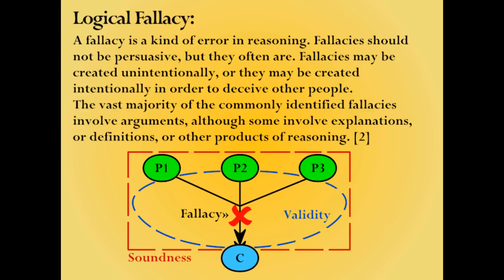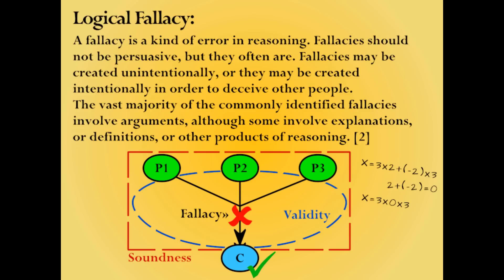It does not address the premises, nor does it address the conclusion. So when an argument contains a logical fallacy, it only indicates that the conclusion is not logically supported by the premises. Further, when an argument is rendered invalid or unsound, it does not mean that the conclusion is rendered false. It's always possible to arrive at a correct conclusion even with erroneous reasoning. It would be similar to working through a complex math problem incorrectly, but still somehow arriving at the correct answer.